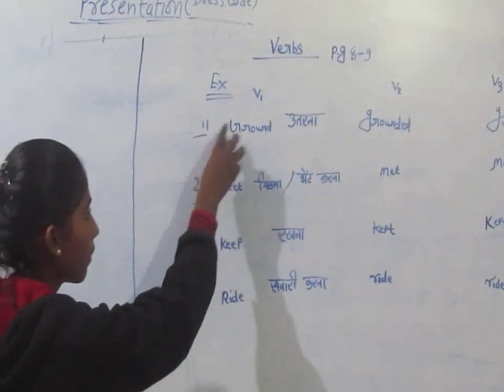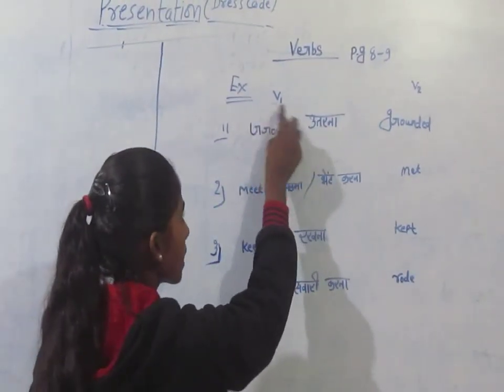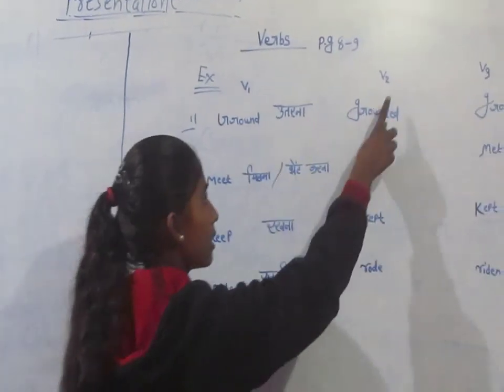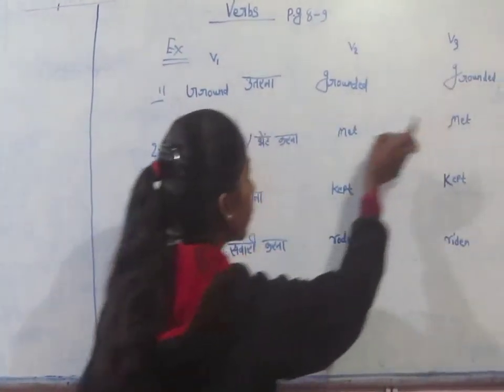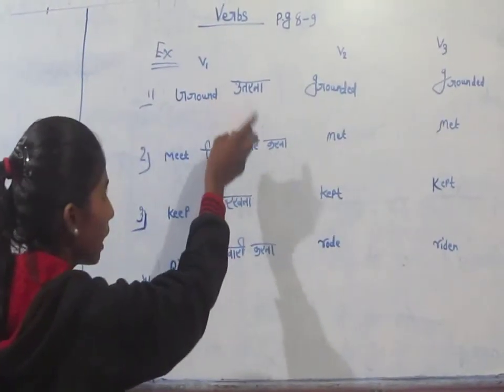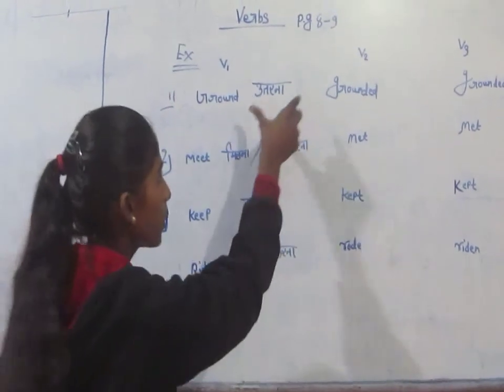In this example, we will look at words in their 2nd and 3rd form, which you can use in different tenses.